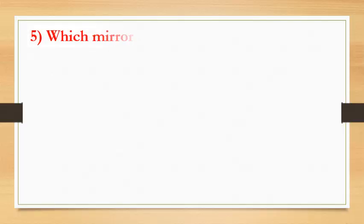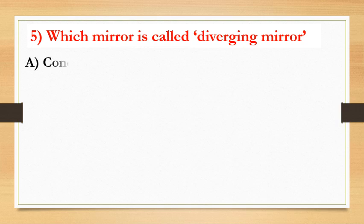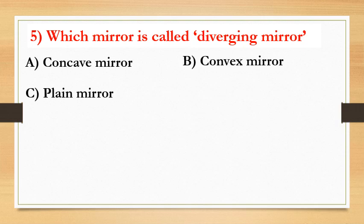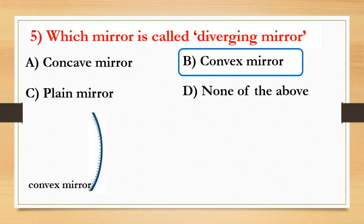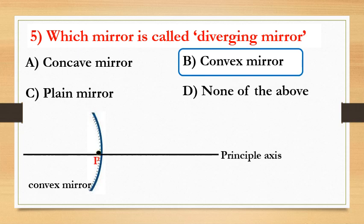Which mirror is called a diverging mirror? Option A: concave mirror. Option B: convex mirror. Option C: plane mirror. Option D: none of the above. The answer is convex mirror. Observe the following video — we take a convex mirror, draw a principal axis, and identify the pole, focus, and center of curvature.